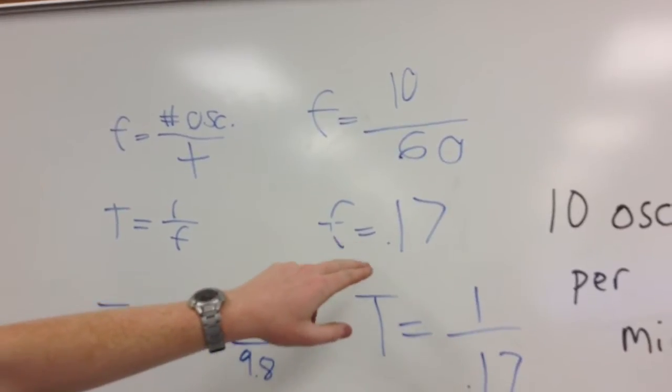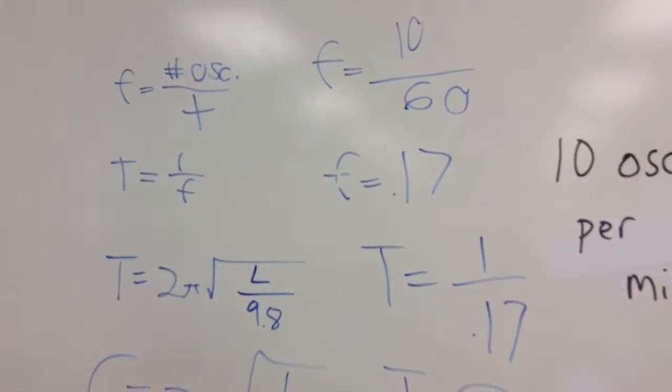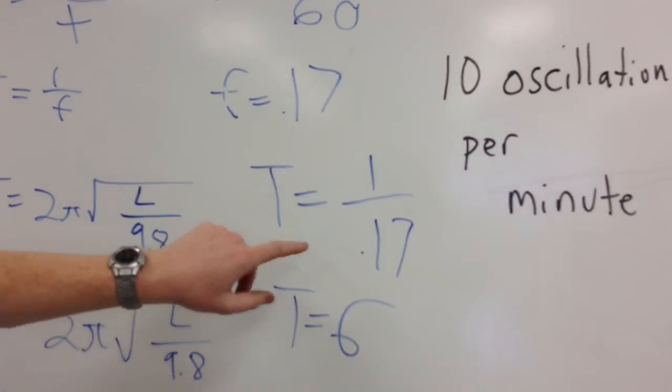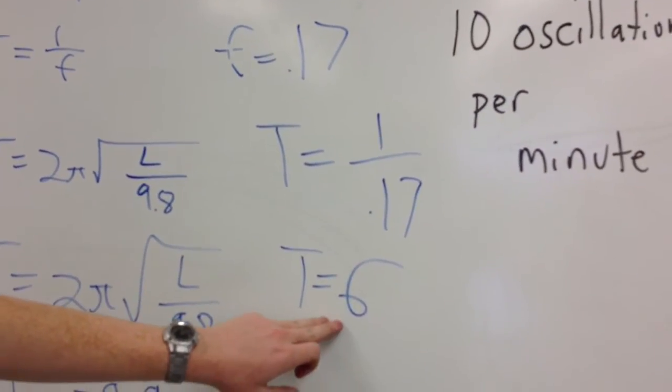We have f equals 0.17, so we can substitute the f into this formula, t equals 1 over f, where t equals 1 over 0.17, to find the t value of 6.